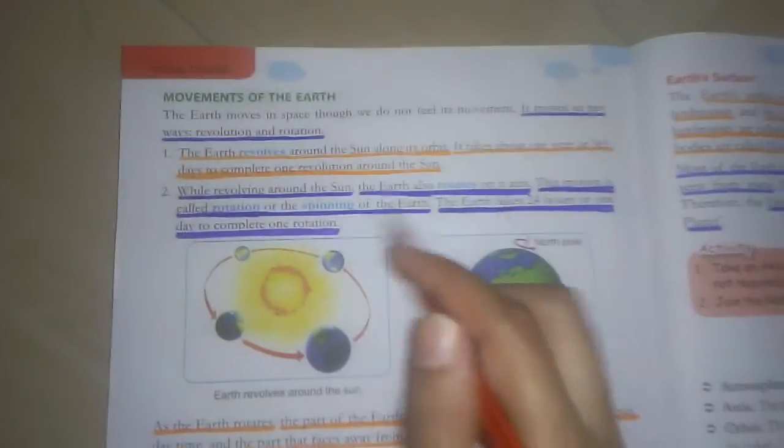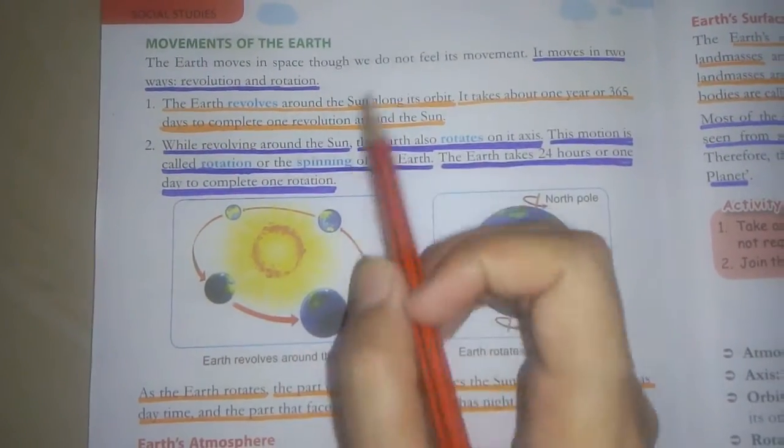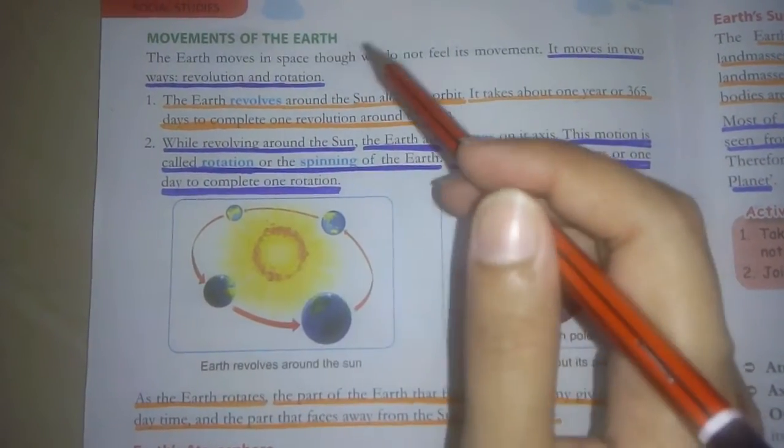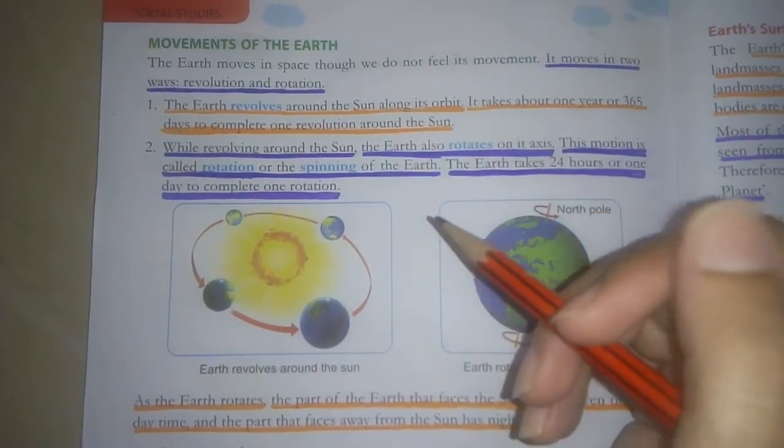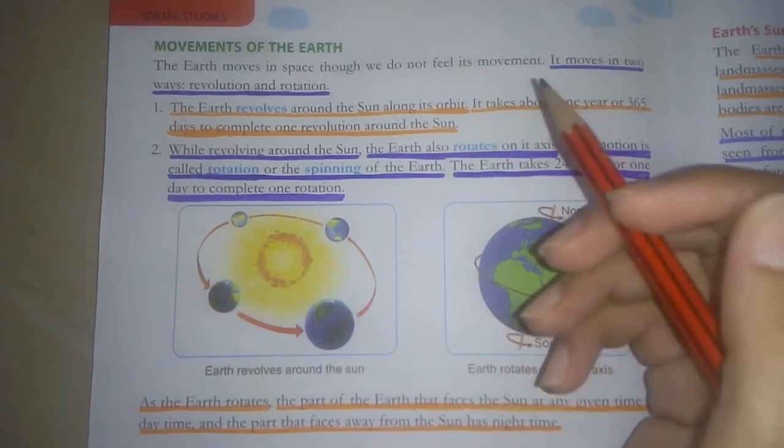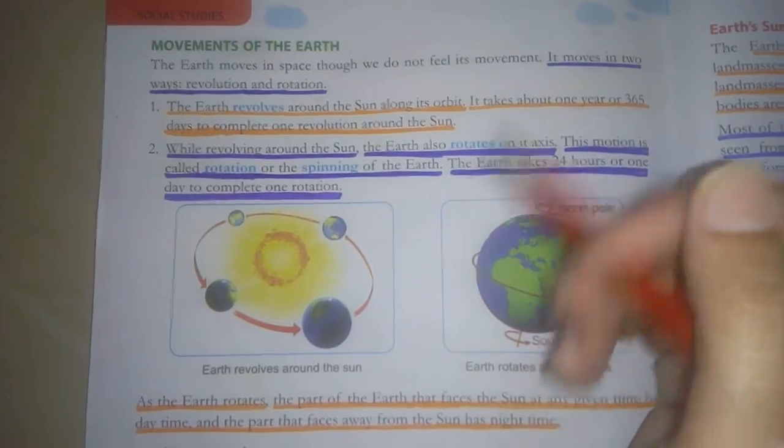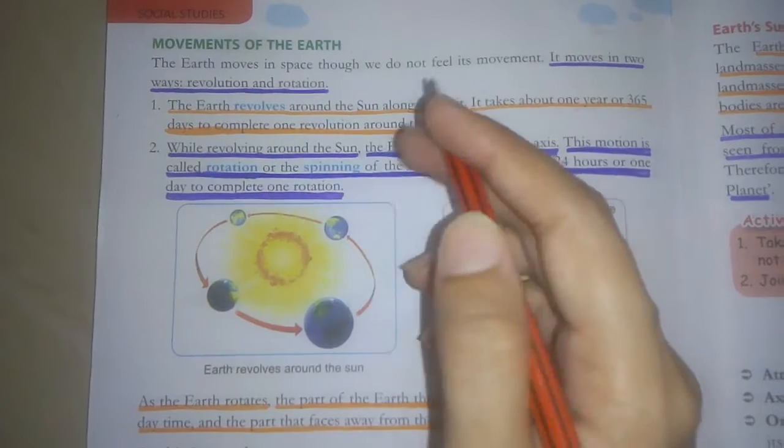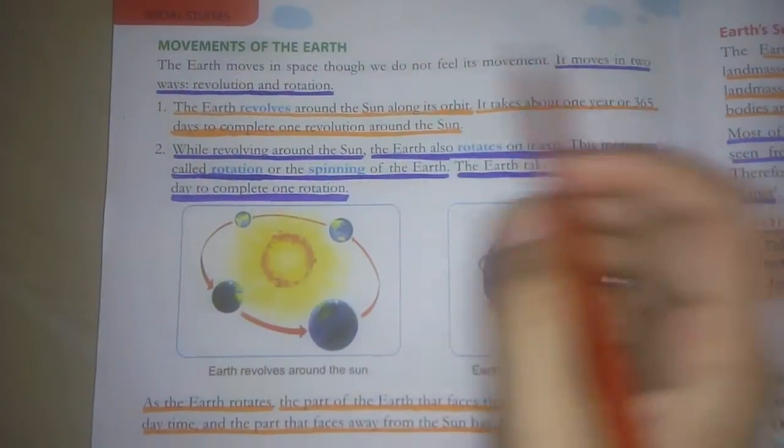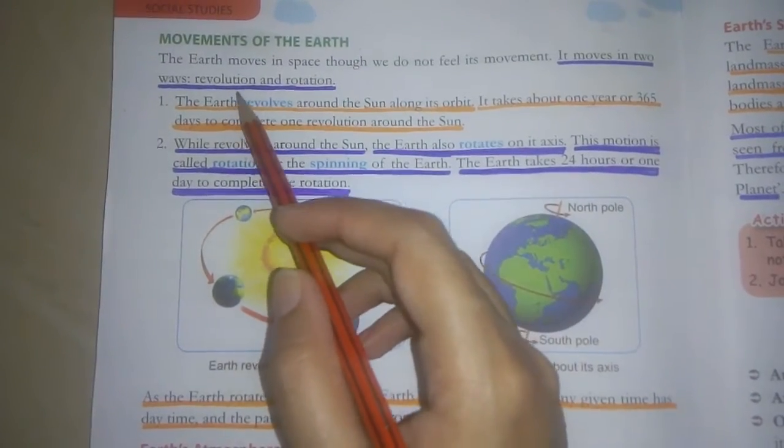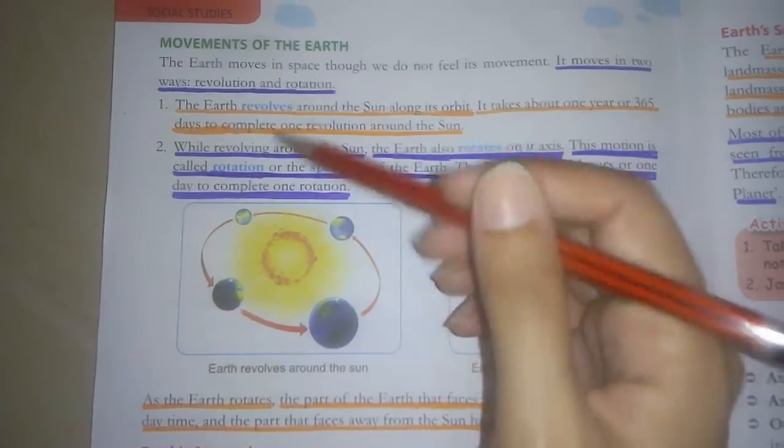Now turn the page. Page number 180. Our next topic is movements of the earth. You know very well, earth moves in space, but why you can't feel its movement? Have you ever thought about it? It moves in two ways: revolution and rotation. Earth moves in two types - one is revolution and one is rotation.